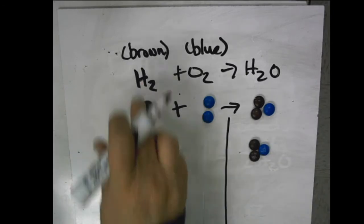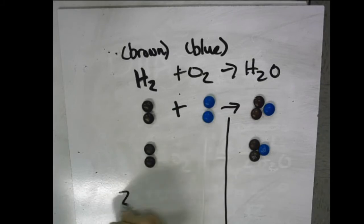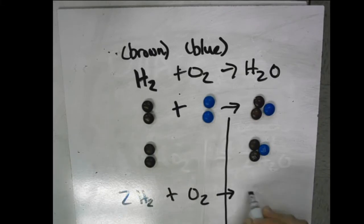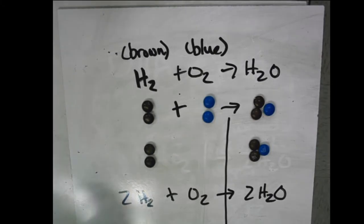So my final would be I have two hydrogen plus one oxygen. We don't write one, yields two H2O. And that is now a balanced equation. So let's go see how we enter that on our lab sheet.